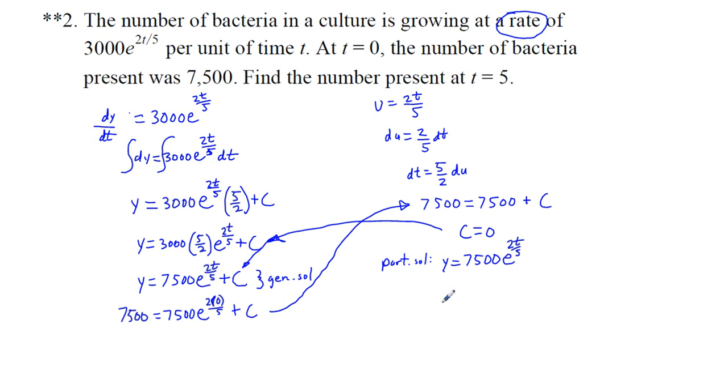At t equals 5, y is going to be equal to 7,500 e to the 2 times 5 divided by 5. So y is going to be equal to 7,500 e, and 5 over 5 cancel. So we have e squared. So y is equal to 7,500 e squared. And that will be our number of bacteria.